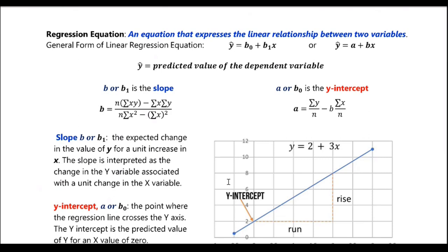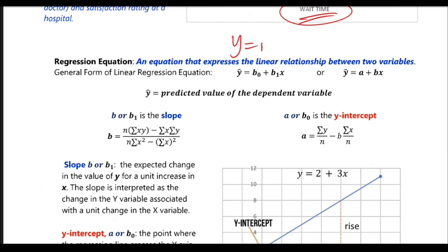The regression equation — that line actually has an equation. If you remember from high school, y equals mx plus b is the equation of a line. So basically, m is the slope and b is the y-intercept.